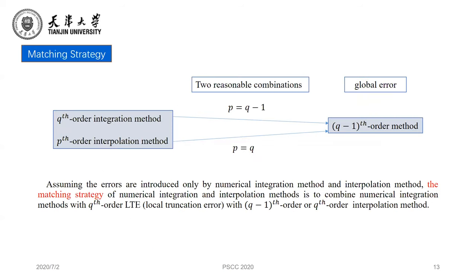A reasonable combination leads to loss of integration accuracy. The matching strategy is proposed to avoid accuracy loss. Assuming the errors are introduced only by the numerical integration method of order Q and the interpolation method of order P: when P equals Q minus one, the global error determined by both methods is of order Q minus one, so the combination is economical. When P equals Q, the Q-order interpolation method can hold the accuracy of the integration method to achieve better results. In short, the matching strategy is to combine a Q-order numerical integration method with a Q-order or Q minus one order interpolation method.